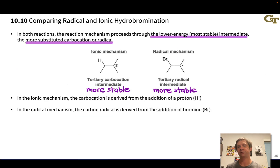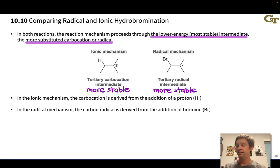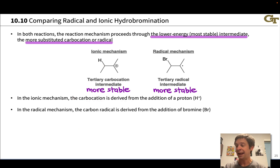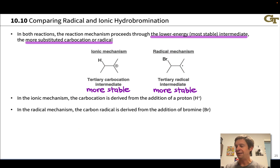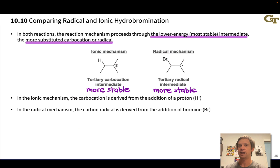To summarize: in the ionic mechanism, the key intermediate is a more substituted carbocation derived from proton transfer, which puts the halogen at the more substituted position. In the radical mechanism, the key intermediate is a more substituted radical derived from addition of the halogen first, so hydrogen ends up at that radical center and the halogen ends up at the less substituted position. In both cases, the favored reaction pathway involves the lower-energy, more stable reactive intermediate.